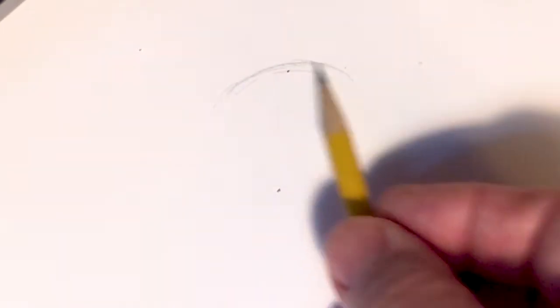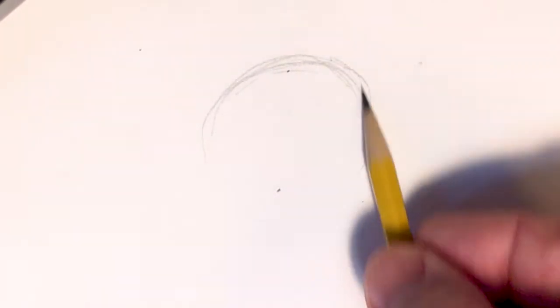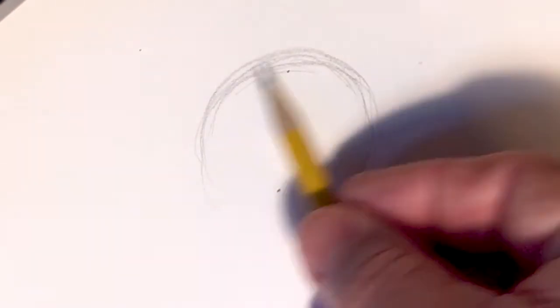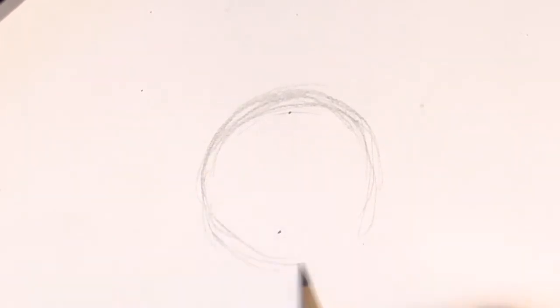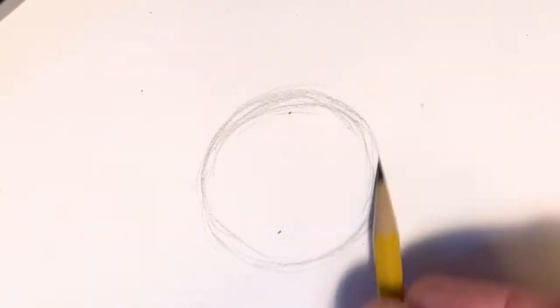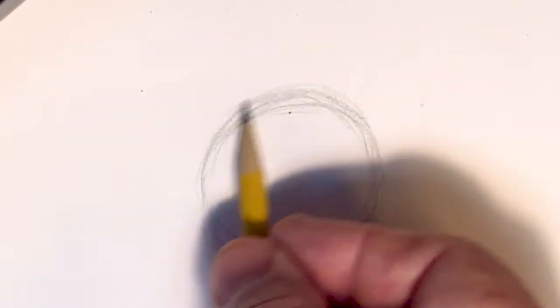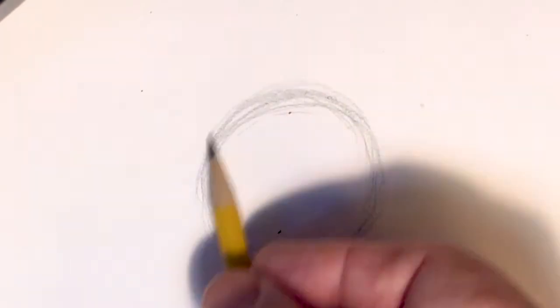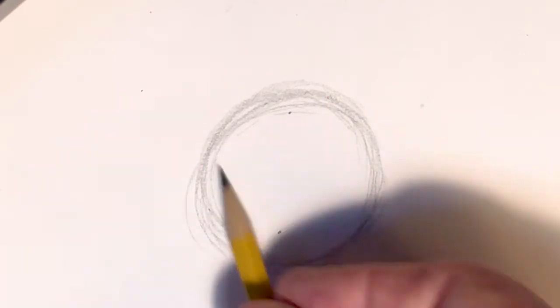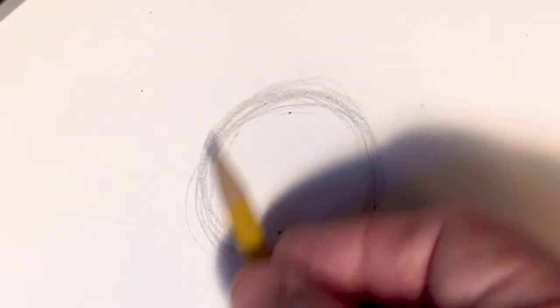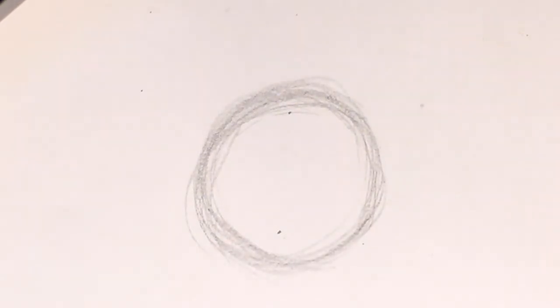Step number one, in the center of your paper, lightly, and that's the key word to sketching, lightly sketch in a circle that's about as big as an orange. Now the whole trick here is that you're not writing a letter O, you're building a circle. If you look at what I've done here, all I've done is sketch in curved lines. Then I'm blending it together with another curve to build and shape this.